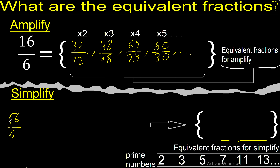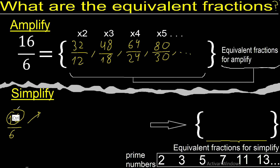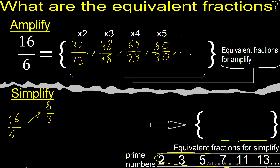Now, 16 and 6 can be divided by 2. 16 divided by 2 is 8. 6 divided by 2 is 3. 16 and 6 cannot be divided by another number. 8 and 3 cannot be divided by the same number. Therefore, 4.